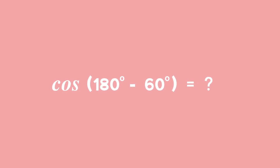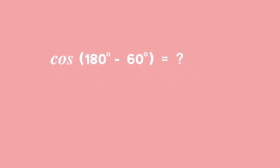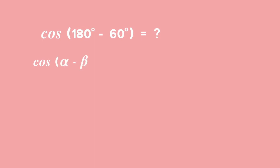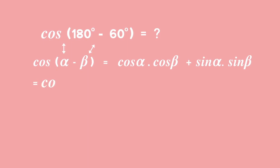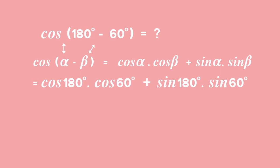We can apply the rule to cos of (180 degrees minus 60 degrees) by realising that alpha and beta are simply placeholders for any angle. Cos of (180 degrees minus 60 degrees) is equal to cos 180 degrees times cos 60 degrees plus sin 180 degrees times sin 60 degrees. Using special angles, we get negative 1 times a half plus 0 times the square root of 3 over 2.